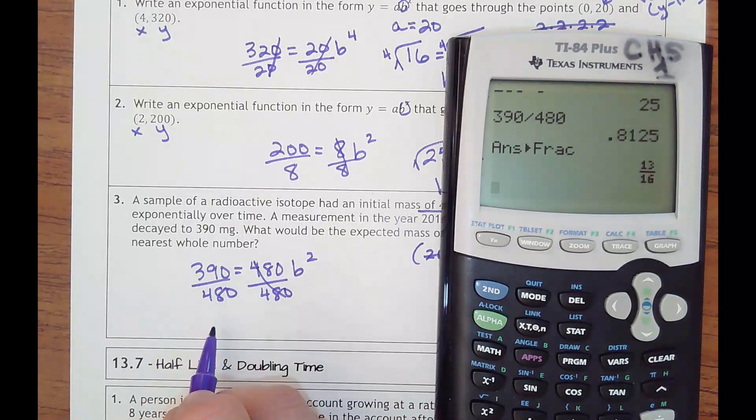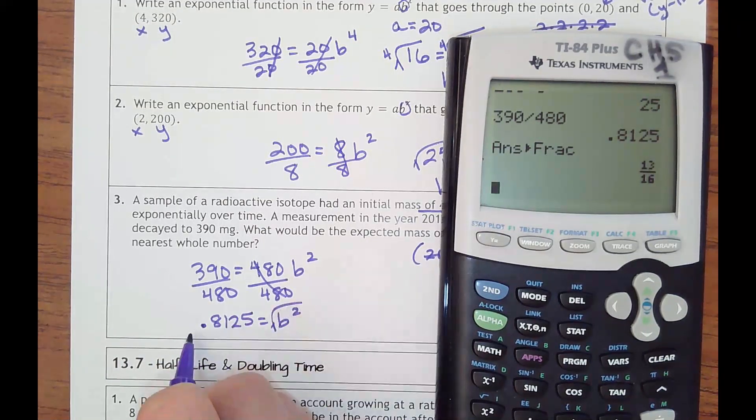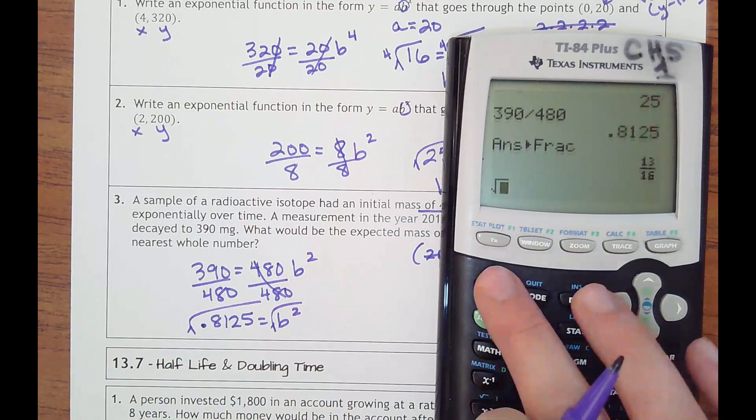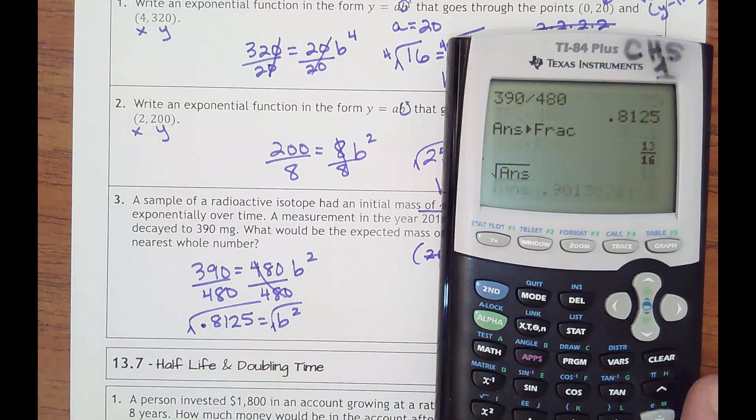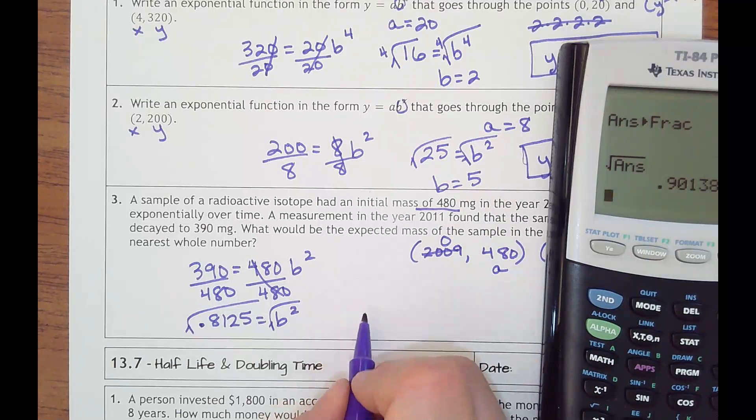So 0.8125 equals something squared. I would just need to square root that. And I get that. So I'm going to keep several of those decimals here. Let me write my equation.